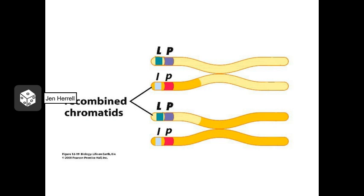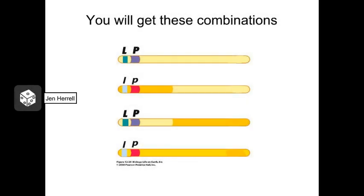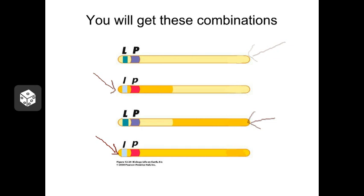Here we have the chromosomes after crossing over is complete. Notice that the big P's and big L's tended to stay together — they didn't get separated or mixed up with the little p's or little l's. And the little p's and little l's tended to stay together as well, even though other genes on this chromosome did get mixed up into new combinations. Here we have the four separate chromosomes that result from the end of meiosis 2. Notice that 50% contain big P and big L in combination, and the other 50% contain little p and little l in combination. So when two heterozygous plants are bred together, the offspring are mainly purple with long pollen grains and red with short pollen grains.